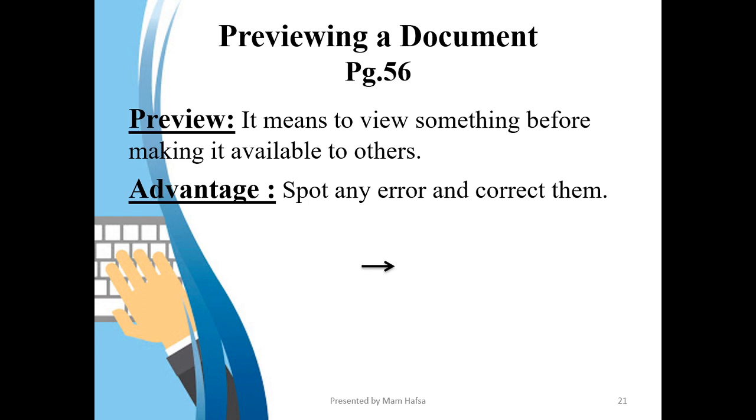Now the last topic: previewing a document, which is given on page 56. Before giving print command to the document we should preview the document. Why? To check whether the text, tables and images are appearing properly. Its advantage is to spot an error and correct it before proceeding for a hard copy. The shortcut of previewing is Ctrl plus P. You can access this feature easily from file tab.